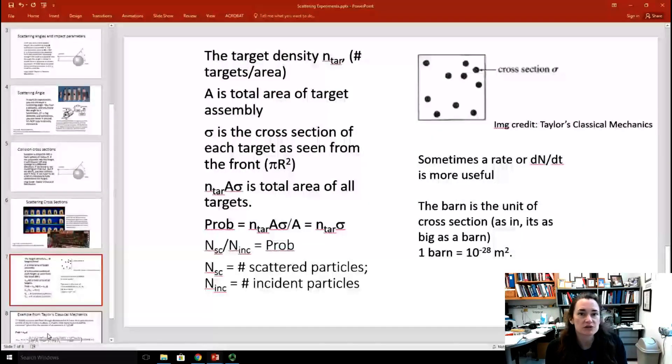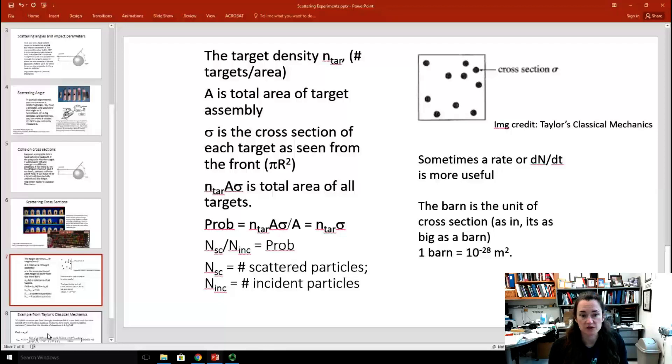Let's go through some of the math of what's going to happen here. The probability that something is going to be scattered off these targets is proportional to how big the targets are. The way that we parameterize that is we talk about the target density, which I'll call N sub tar. And that's the number of targets that you have per unit cross-sectional area.